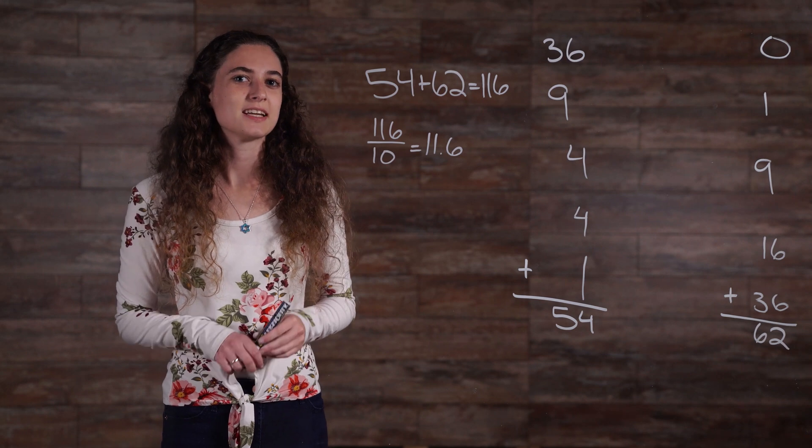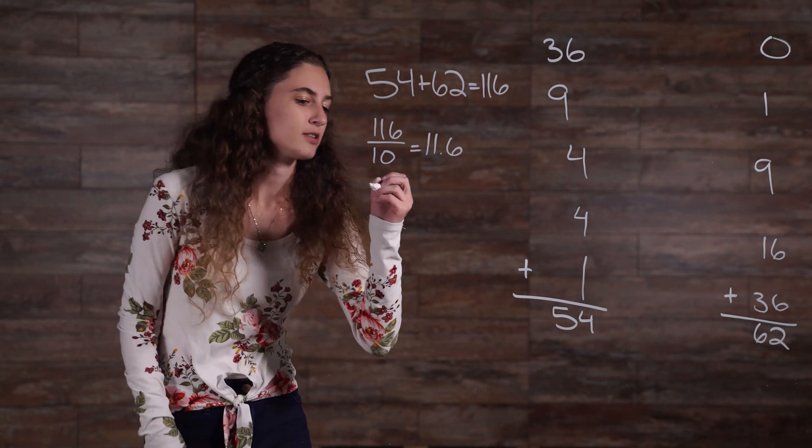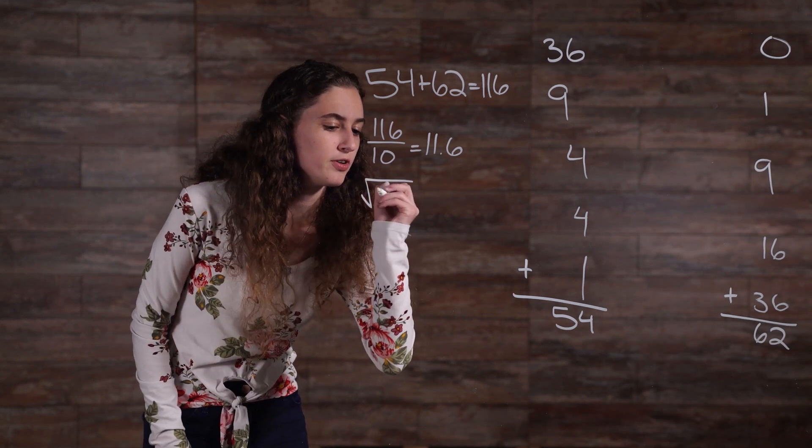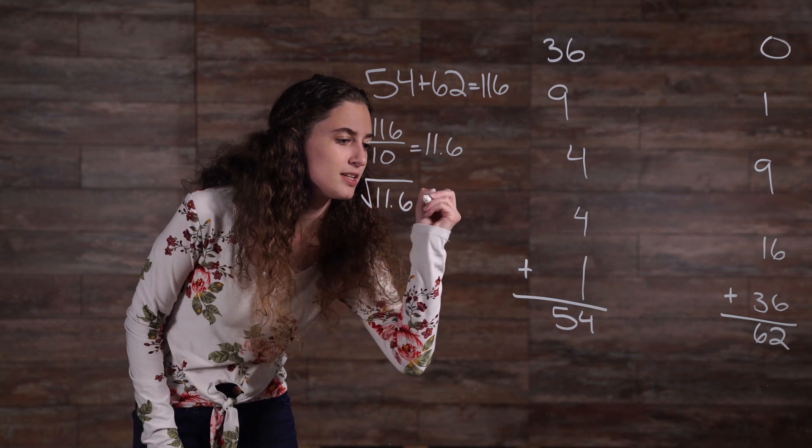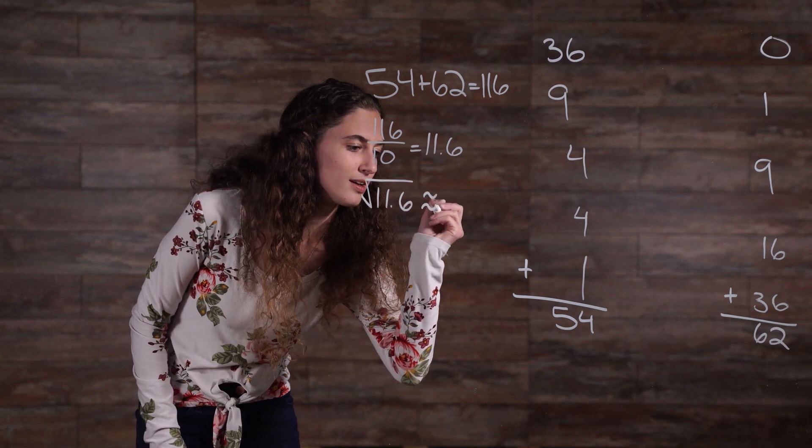To find the standard deviation, I simply take the square root of the variance. The square root of 11.6 is approximately 3.4.